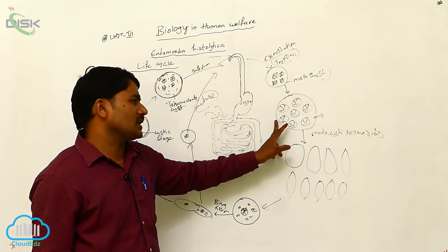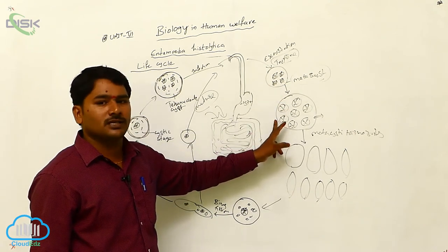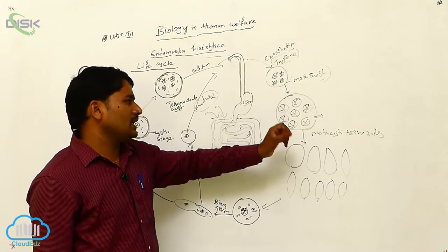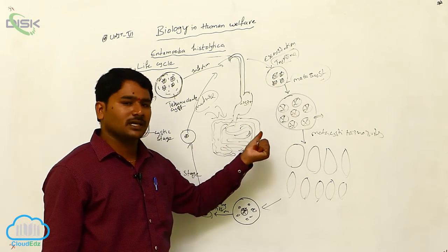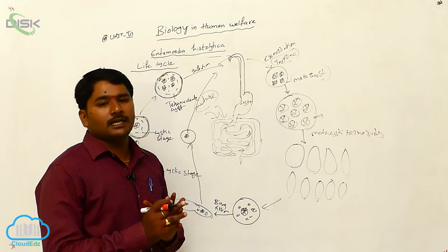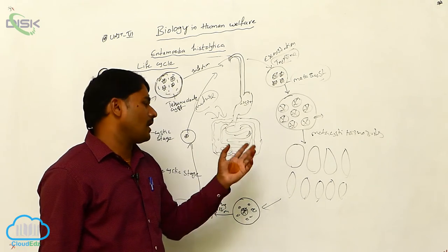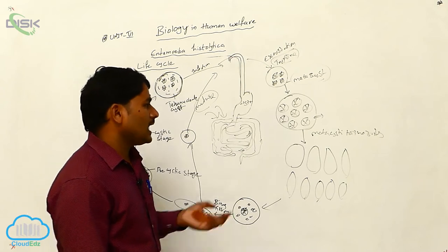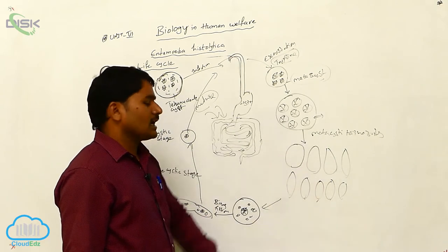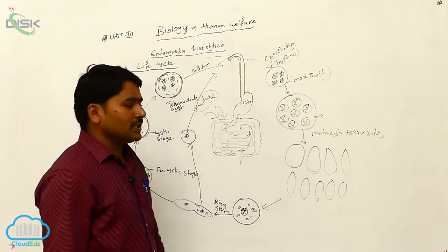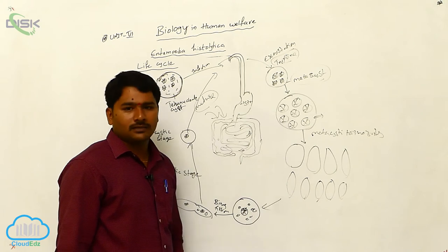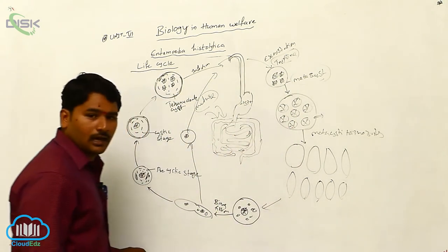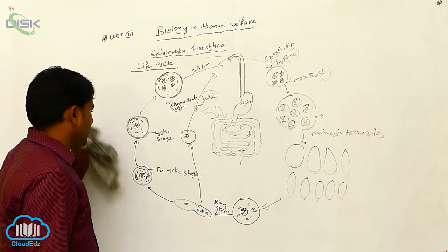The nucleus of the metacystic form undergoes two divisions, forming eight nuclei. Each nucleus receives some cytoplasm, and by rupturing the wall, eight daughter entamoebulae or metacystic trophozoites come outside. These mature into the adult form.